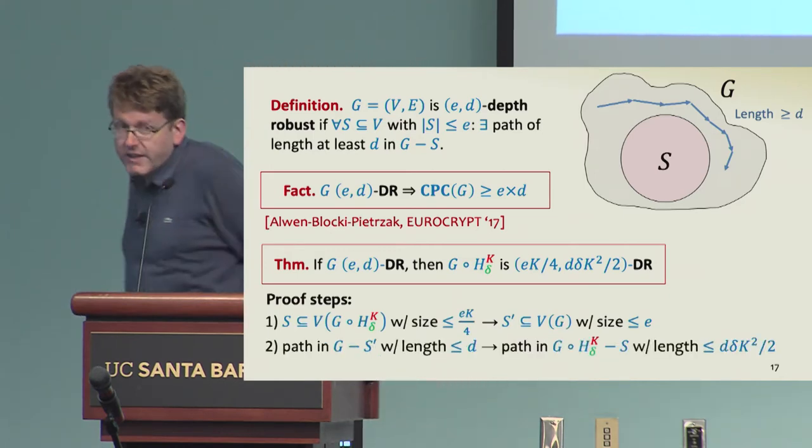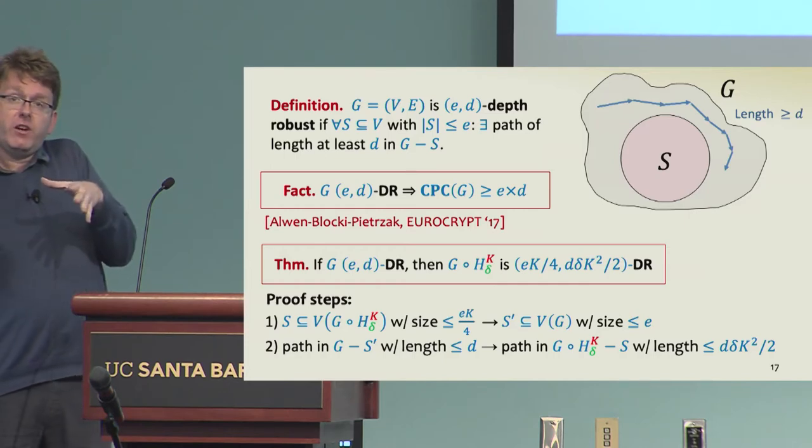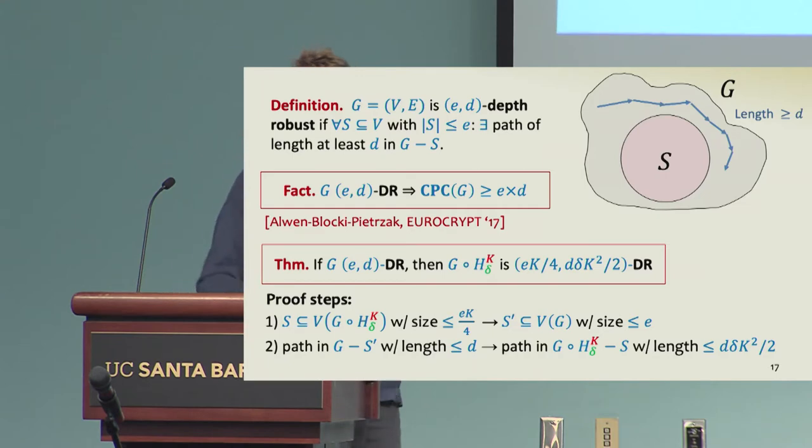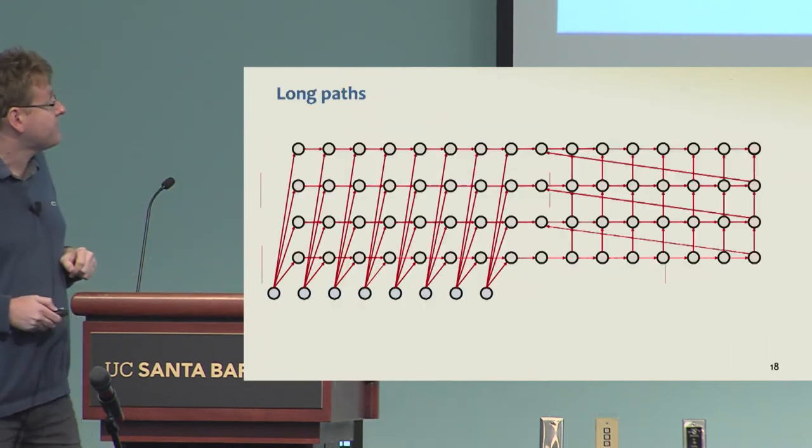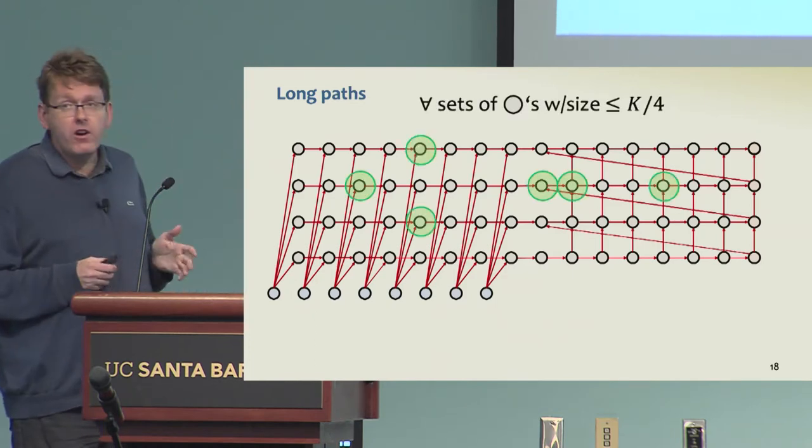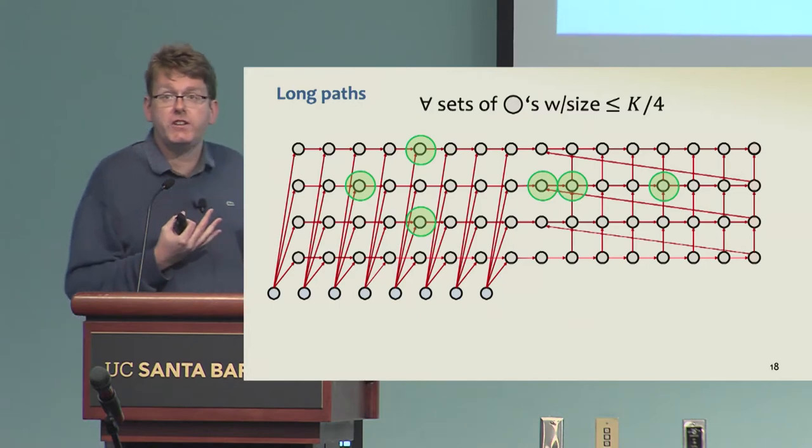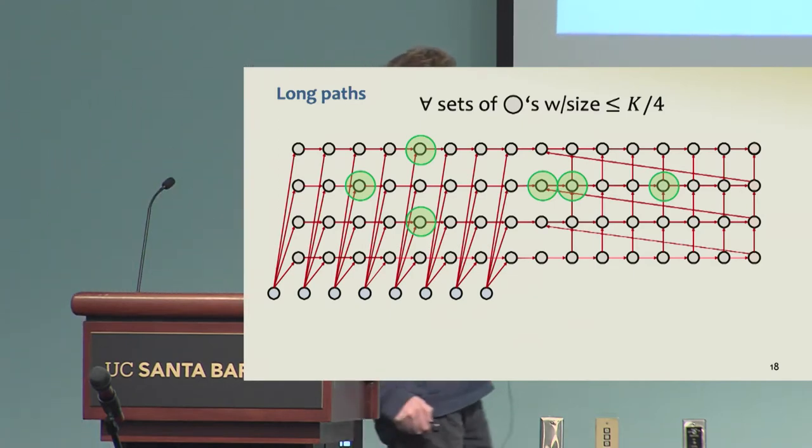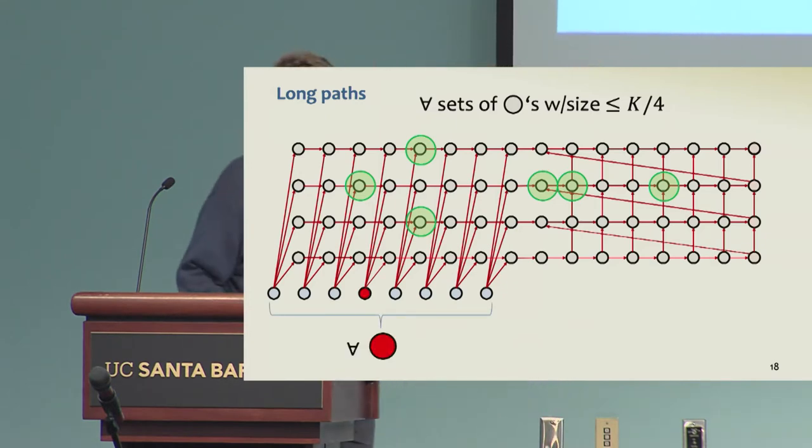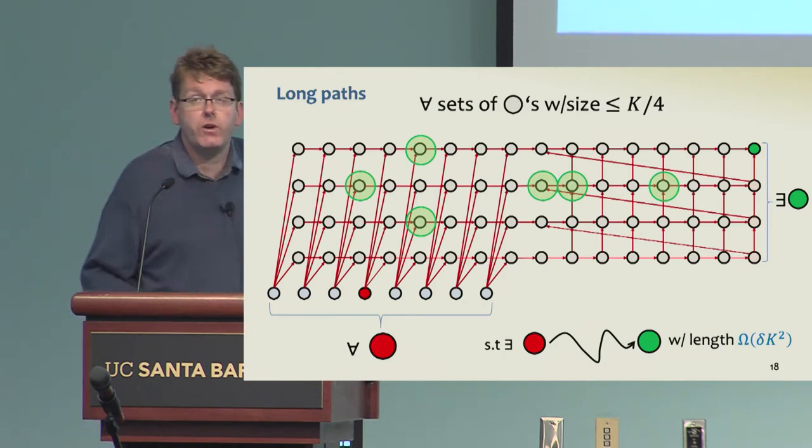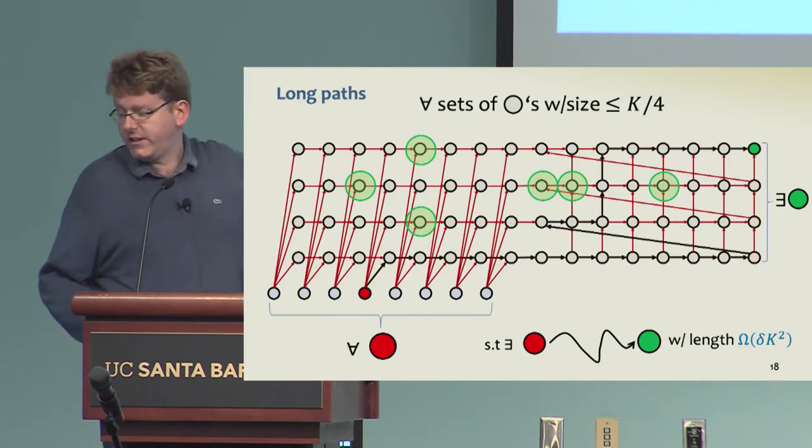In particular, we say that a graph is (D,E) depth robust if whenever you remove up to E vertices from this DAG, the graph still has a long path of length at least D in the rest of the graph. D-E depth robustness implies that the graph has pebbling complexity at least D times E. What we show is that our composed graph has the property that if the base graph is D-E depth robust, then the composed graph has also some good depth robustness, which gives us a lower bound on the cumulative pebbling complexity. The idea of the proof is essentially we want to map a set of vertices in the composed graph back to a set of vertices in the base graph, which is not larger than E, and then use the existence of a long path in the rest to build a longer path back in the composed graph. To do this, we crucially use the following property of our gadget graph: whenever you remove from this graph a subset of its vertices which is not too large, say at most K over 4, then for every possible source of the graph, there is always going to be an exit node on the right-hand side such that there exists a long path of length omega of delta times K squared between the source and the exit node.